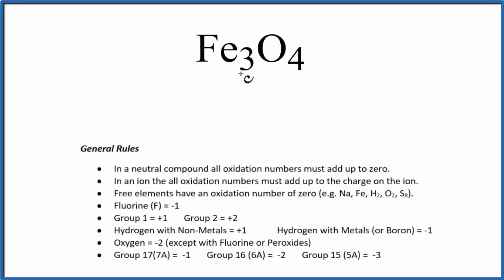To find the oxidation numbers for Fe3O4, we'll use these rules here to guide our work. This is a bit of an odd one. We end up with a fractional oxidation number. So let's see how we get there.